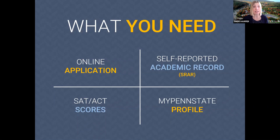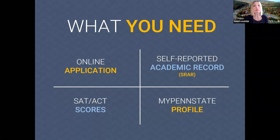For seniors, Penn State has gone test optional for summer and fall 2021. Students decide whether they want their standardized test scores used in the review of their application. If your scores support your academic success in high school, you may choose to submit them. If you feel they don't represent your high school success well, you may choose not to submit them. Helpful test optional frequently asked questions are available on the undergraduate admissions website.